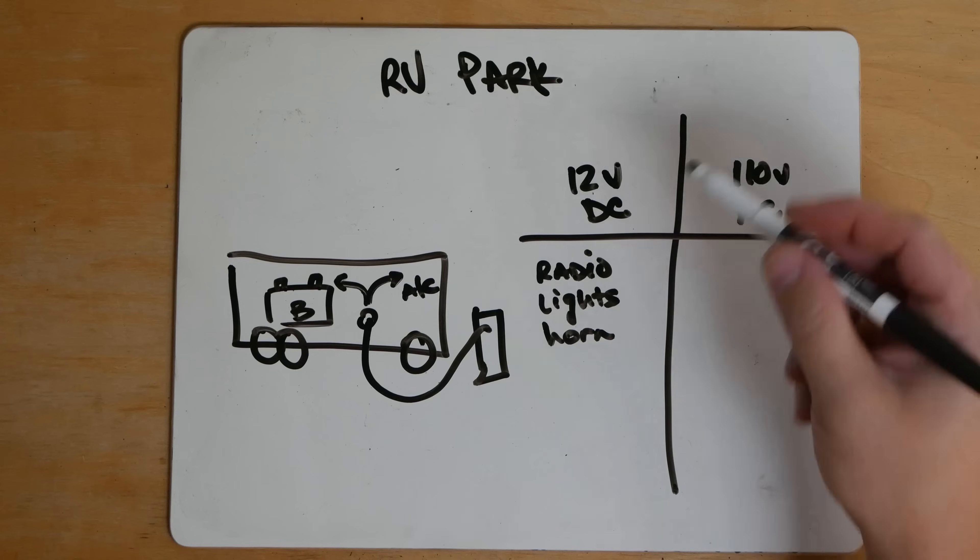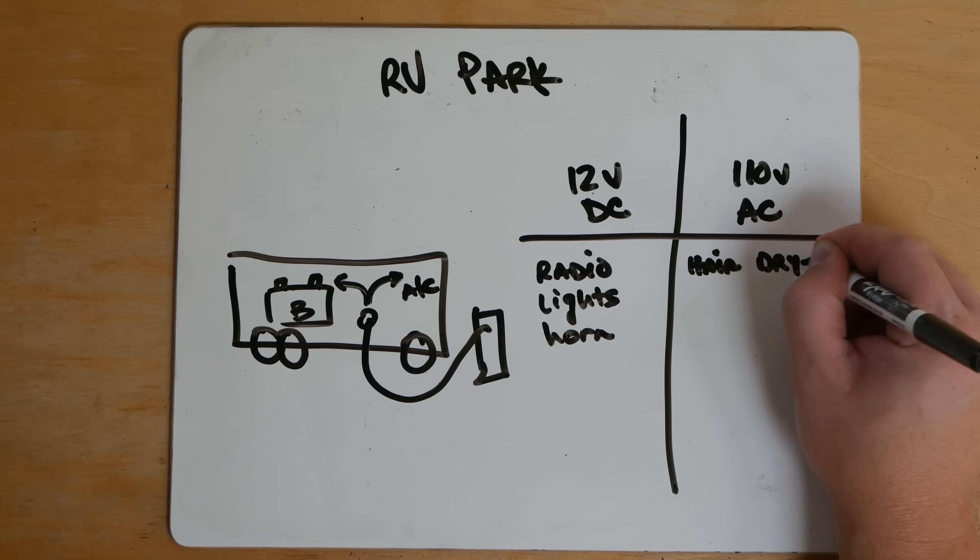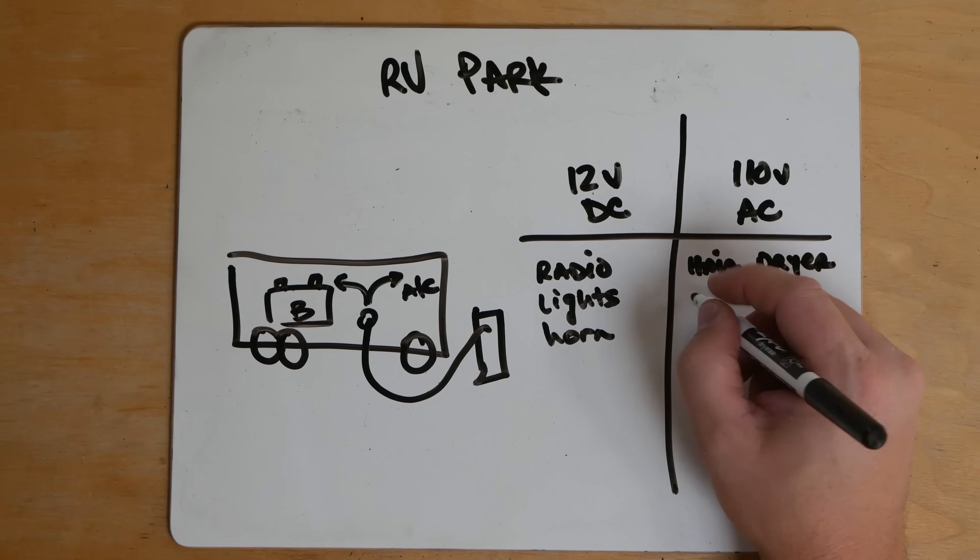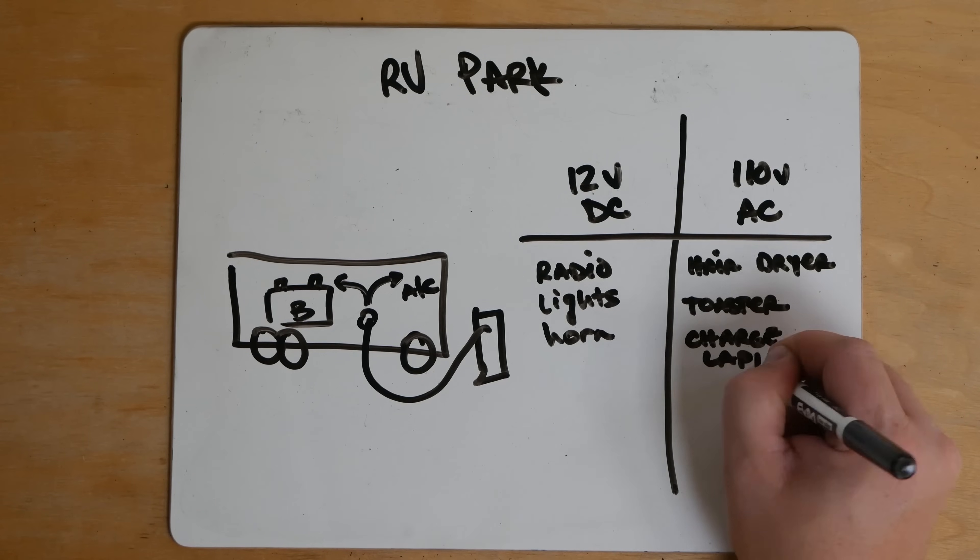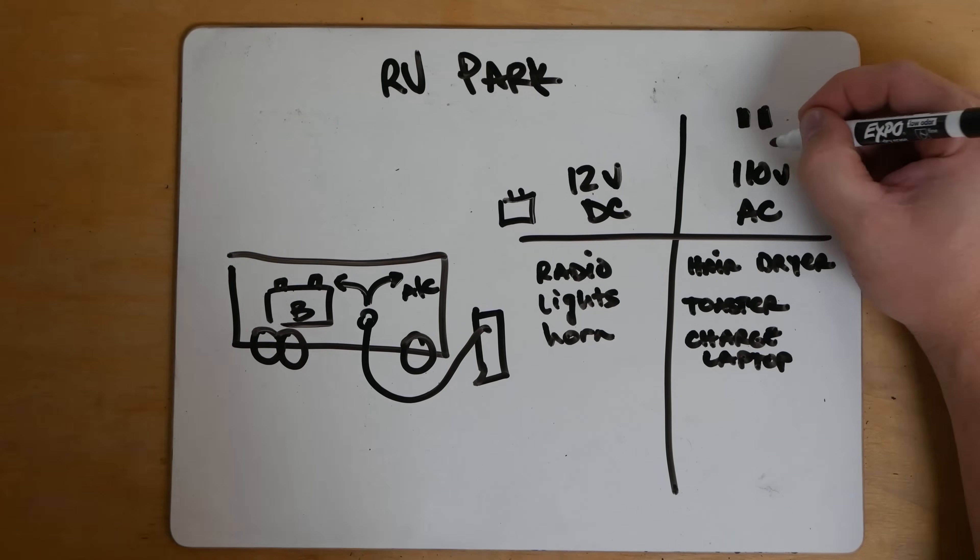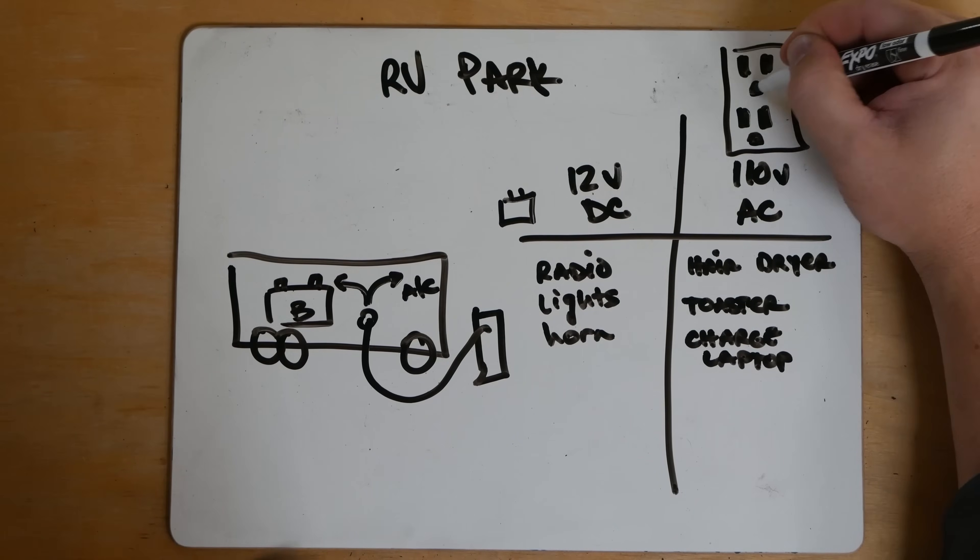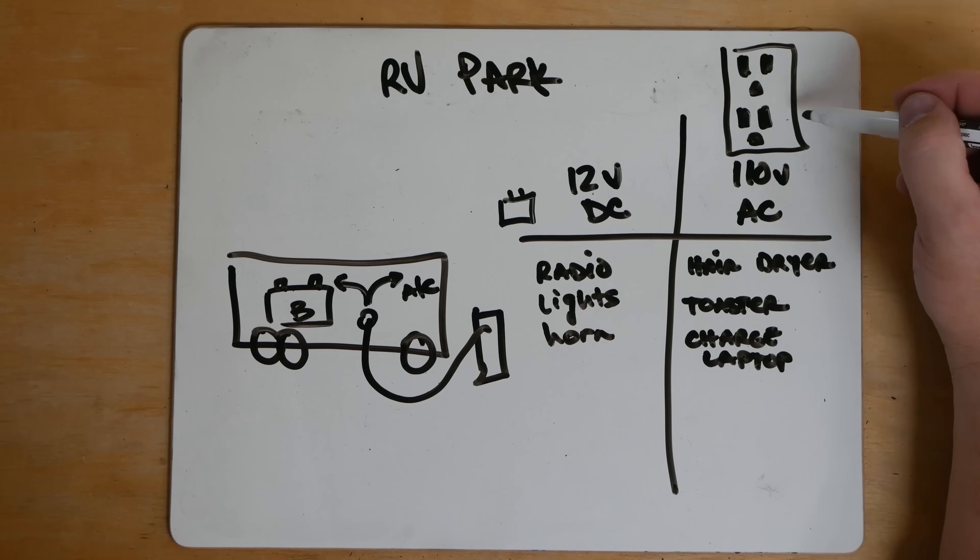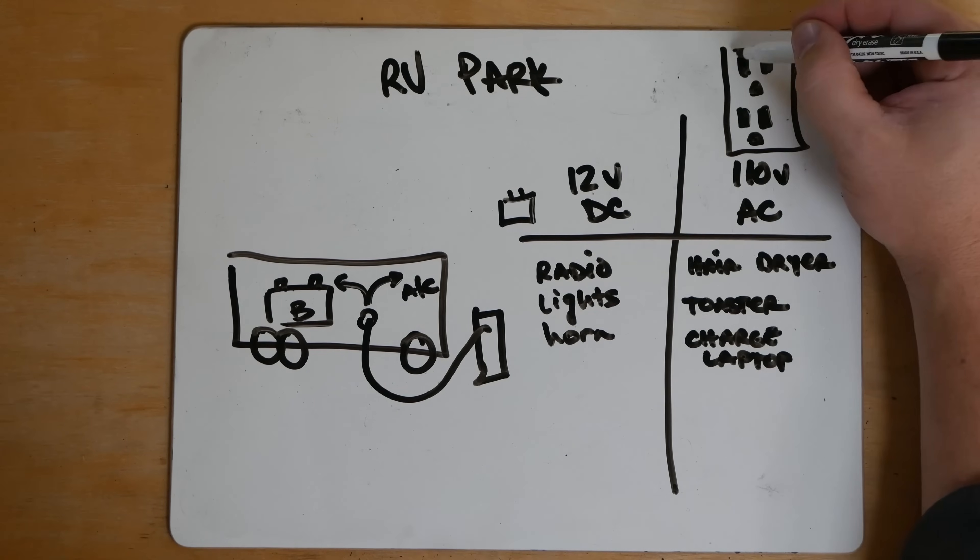So those are all things that can be done with 12 volt. When you're in your house and you plug into the wall what can you do? You can run a hair dryer. You can do a toaster. You can charge a laptop. Anything that goes in a plug you can do off 110 AC and it's a different type of power. This runs off a car battery. This runs off the little slots you see like this. We've all seen those. That's 110 AC. Different type of power than 12 volt DC.